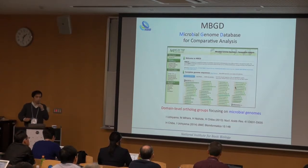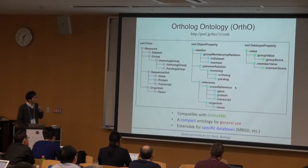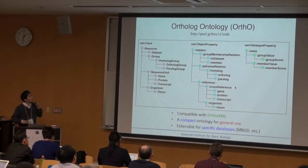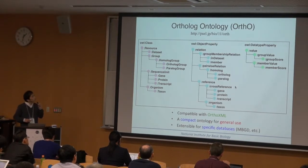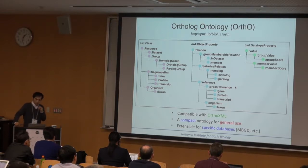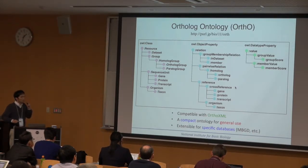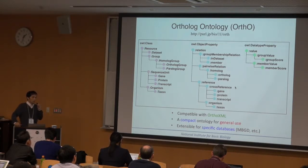To enhance the usability of this database, we created an RDF version of the NVGD database. As a basis of the RDF model, we created an ortholog ontology. This ontology is a compact ontology for general use, but it can be extended for describing more specific concepts, such as NVGD-specific concepts.